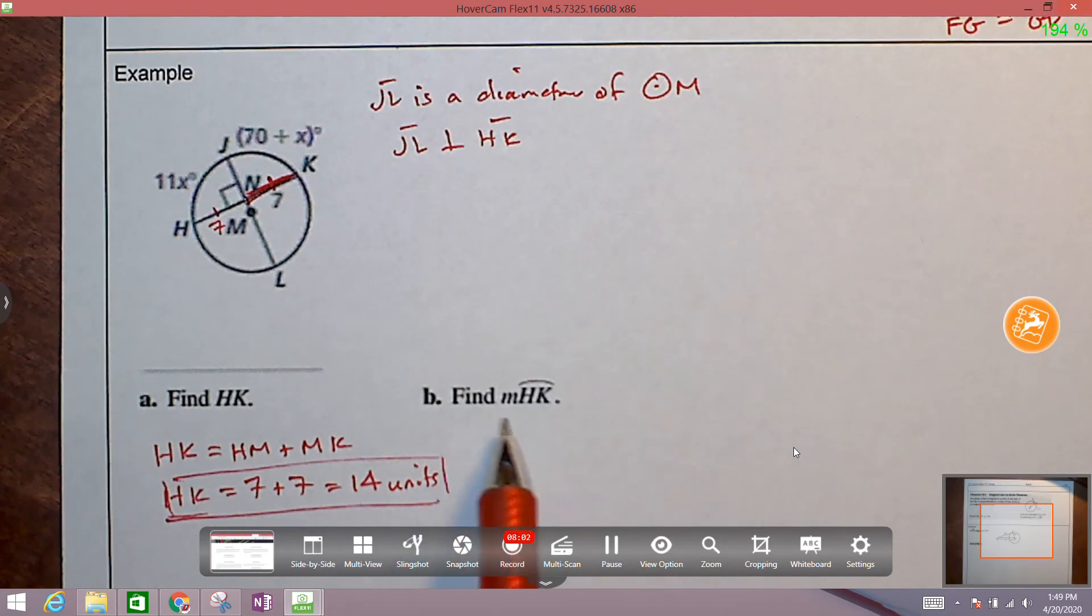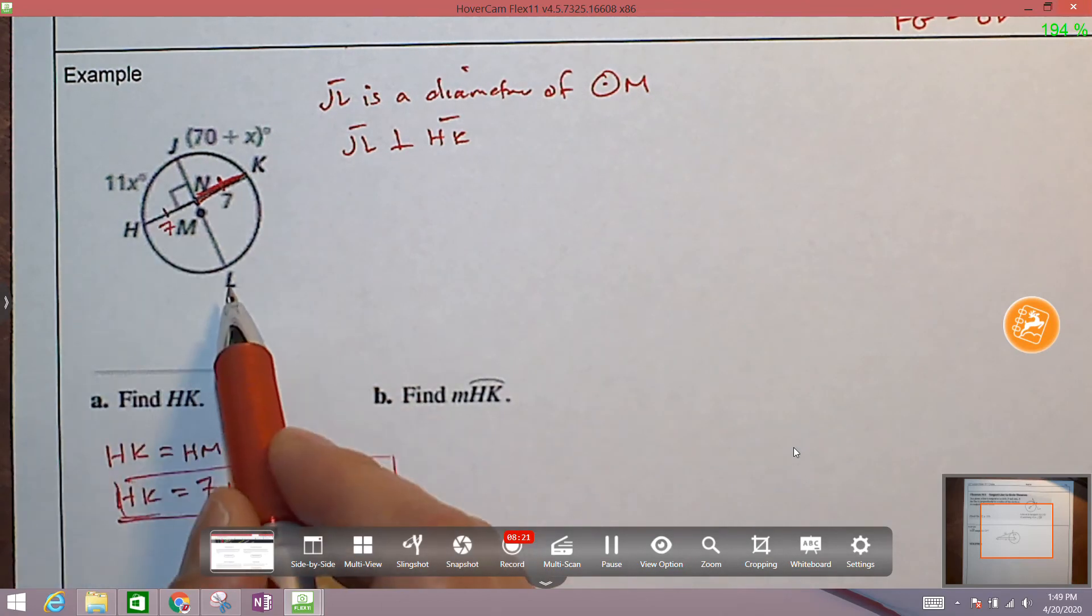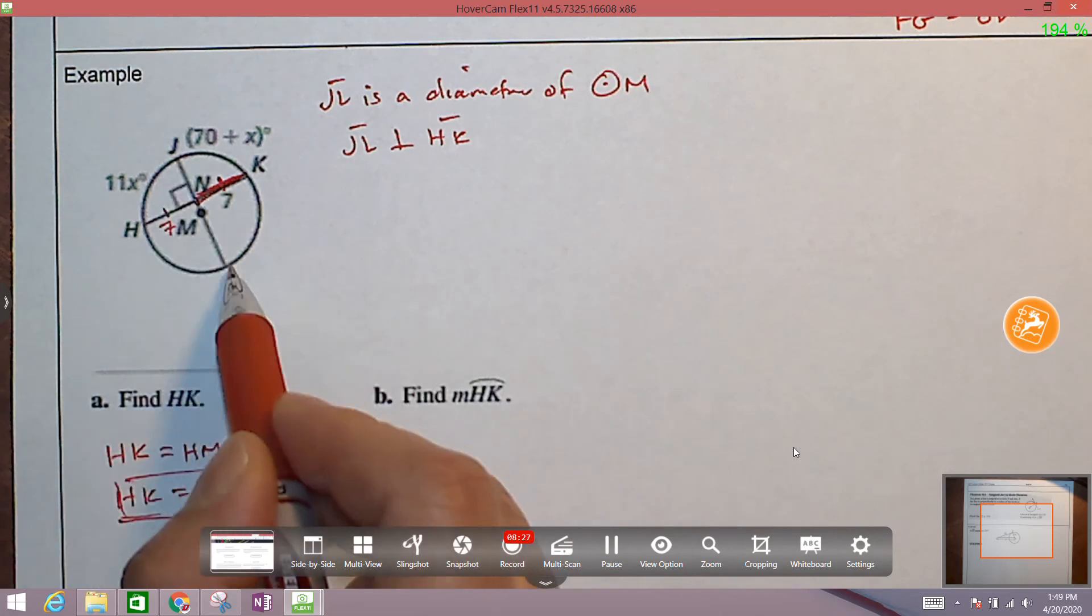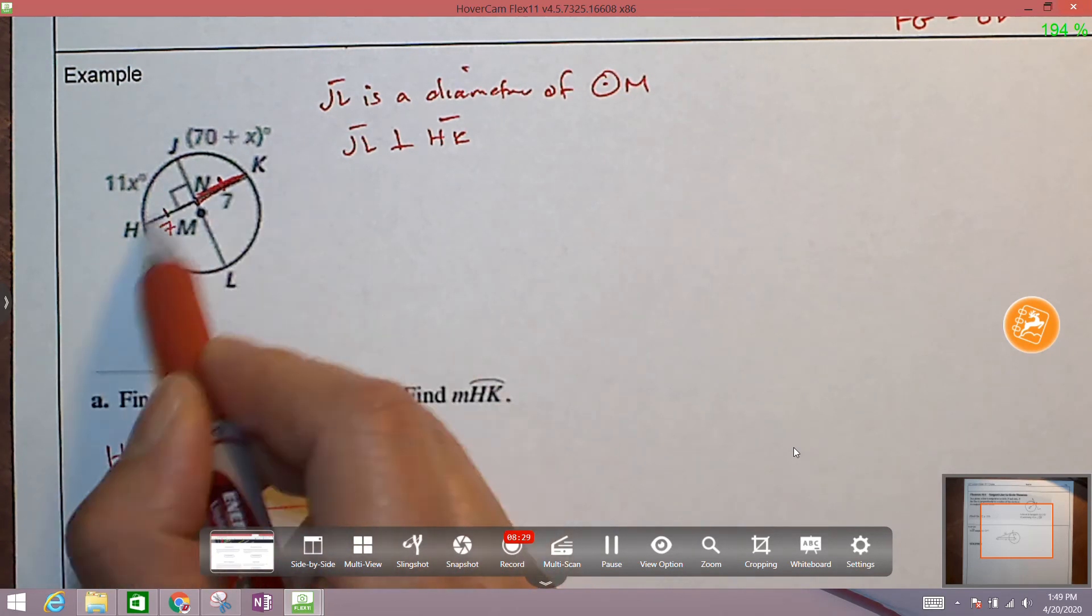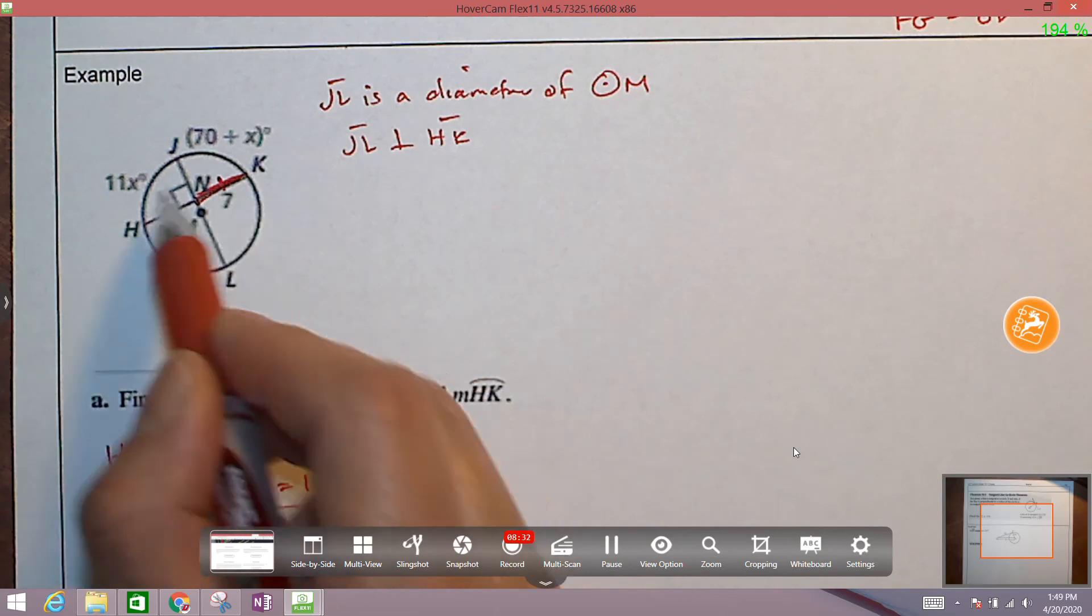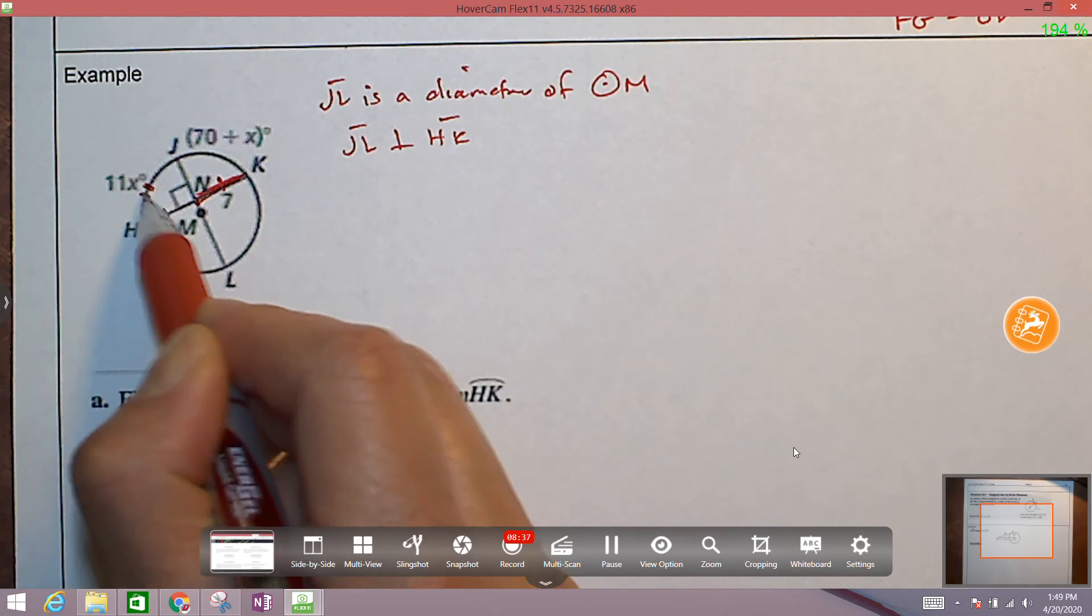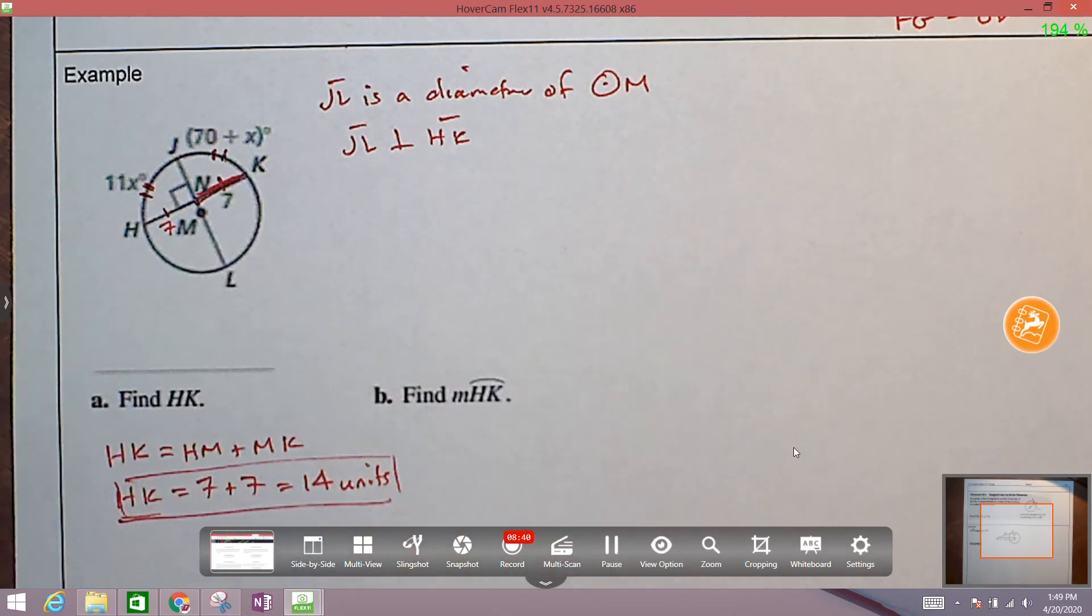Now we're asked to find the measure, and that means how long, the measure of, excuse me, not the length, but the measure of arc HK. So the measure of the arc is how many degrees. So let's take a look at a picture. Well, again, the theorem tells us that this diameter, it's a perpendicular bisector to this chord, so it cuts it in half. It also cuts this in half so that this piece here is congruent to that piece there.